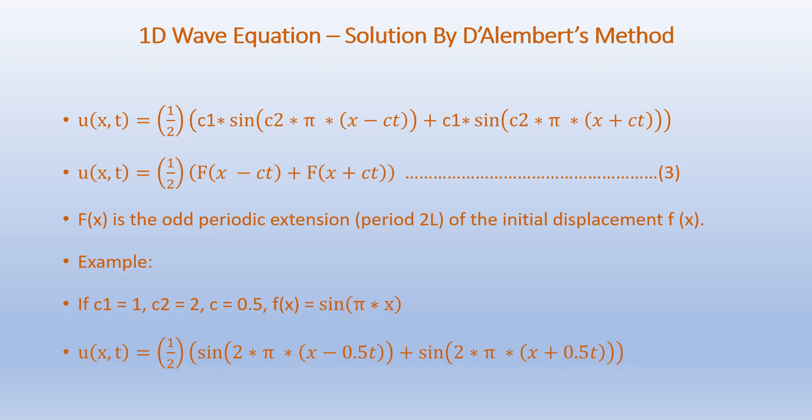Following the same example with C1 equals 1, C2 equals 2, and C equals 0.5, F of X equals sin(π·X), and U of X comma T equals half of [sin(2π·(X−0.5T)) plus sin(2π·(X+0.5T))].